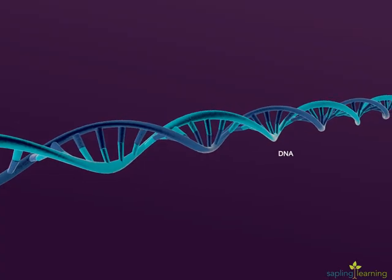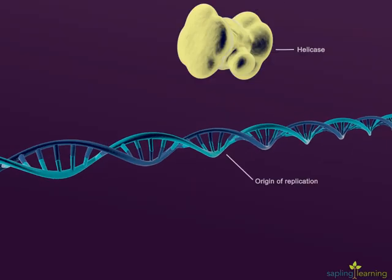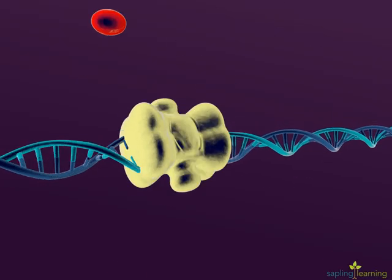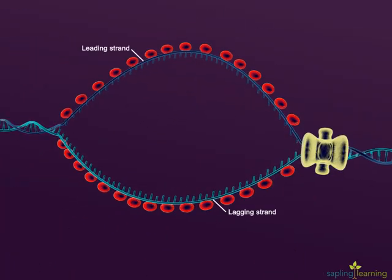The key event in the initiation of DNA replication is the binding of the enzyme helicase at the origin of replication. As helicase moves, it unwinds and separates a portion of DNA. This action separates the leading and lagging strand.